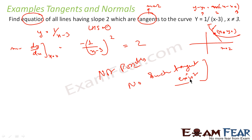So we can say that if we can't find a value of x for which this is true, that means no such tangent exists. Because I could not find a value of x₀, y₀ for which this condition is true. Since we found that it is not possible to find the value, we say that there is no such tangent.